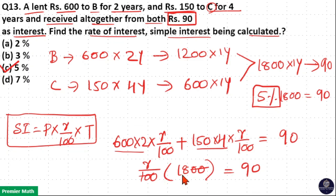Now zero zero cancel, 18 goes 5 times in 90. That means rate is equal to 5 percentage here. So option C is your answer.